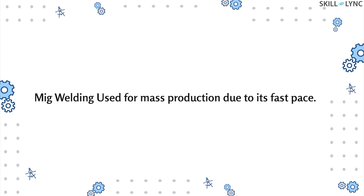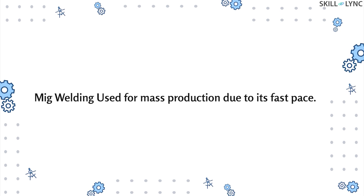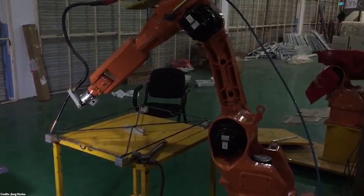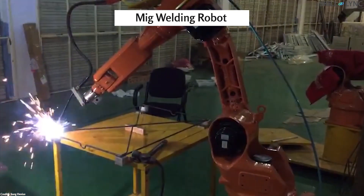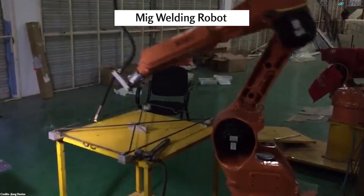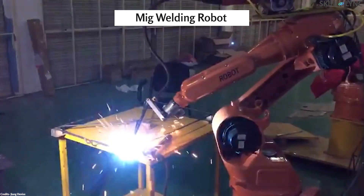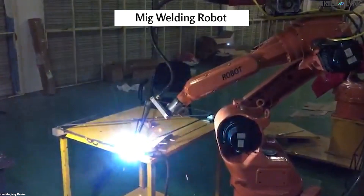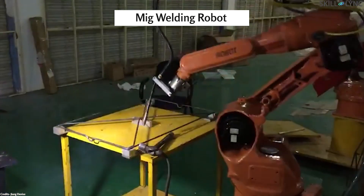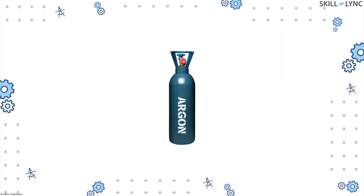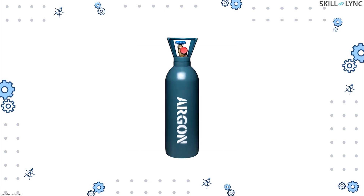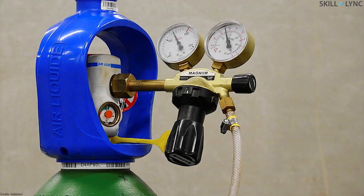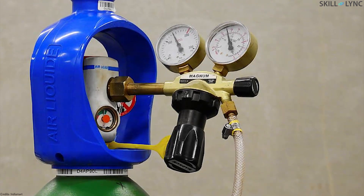To get the best of both worlds, most welders use a mixed gas containing both carbon dioxide and argon. Due to the fast pace at which MIG welding can be done, it is most commonly used to mass produce components. MIG welding is also among the few welding processes that can be automated with the help of robots, mainly due to the continuous feed of electrode material into the weld pool.